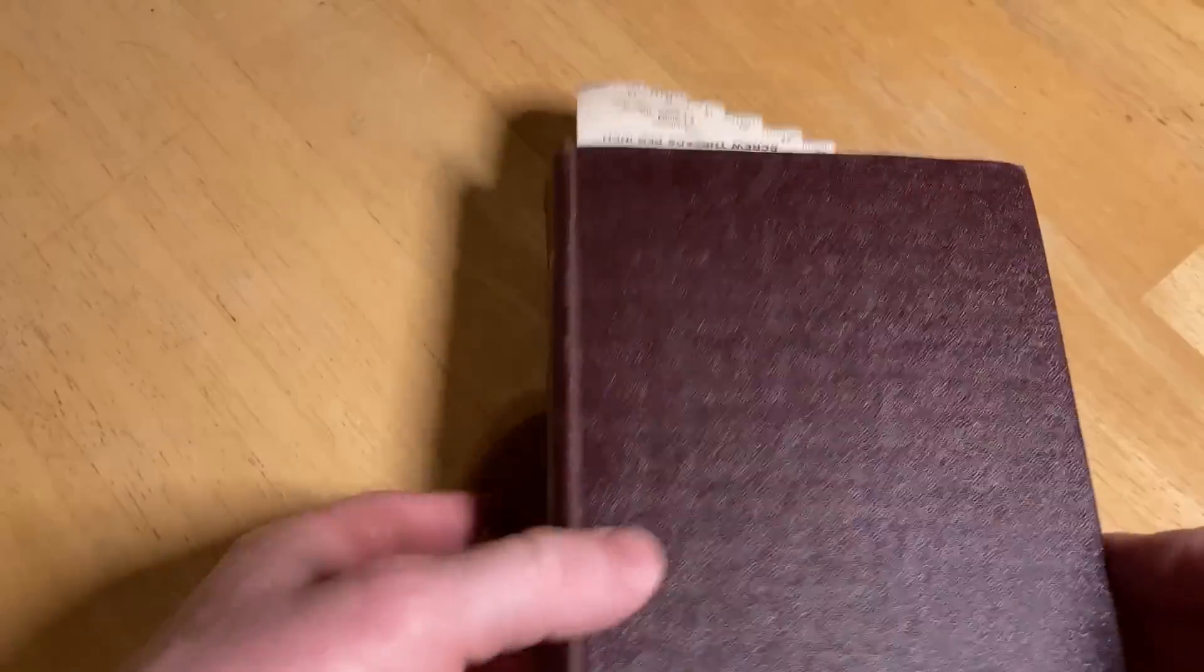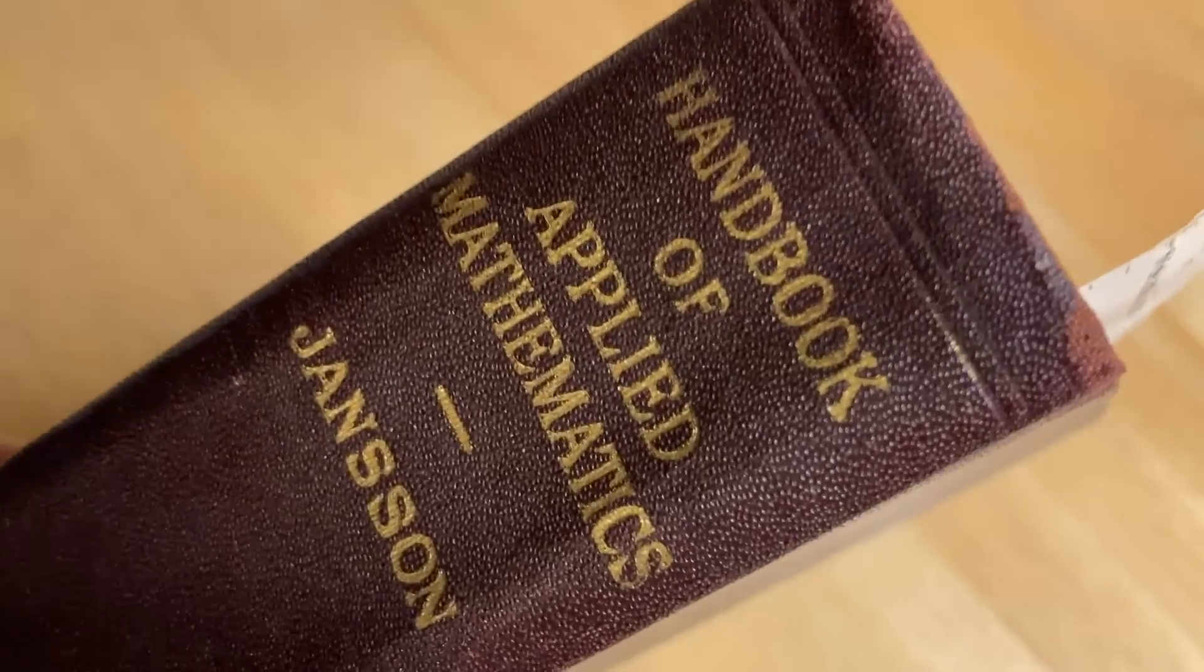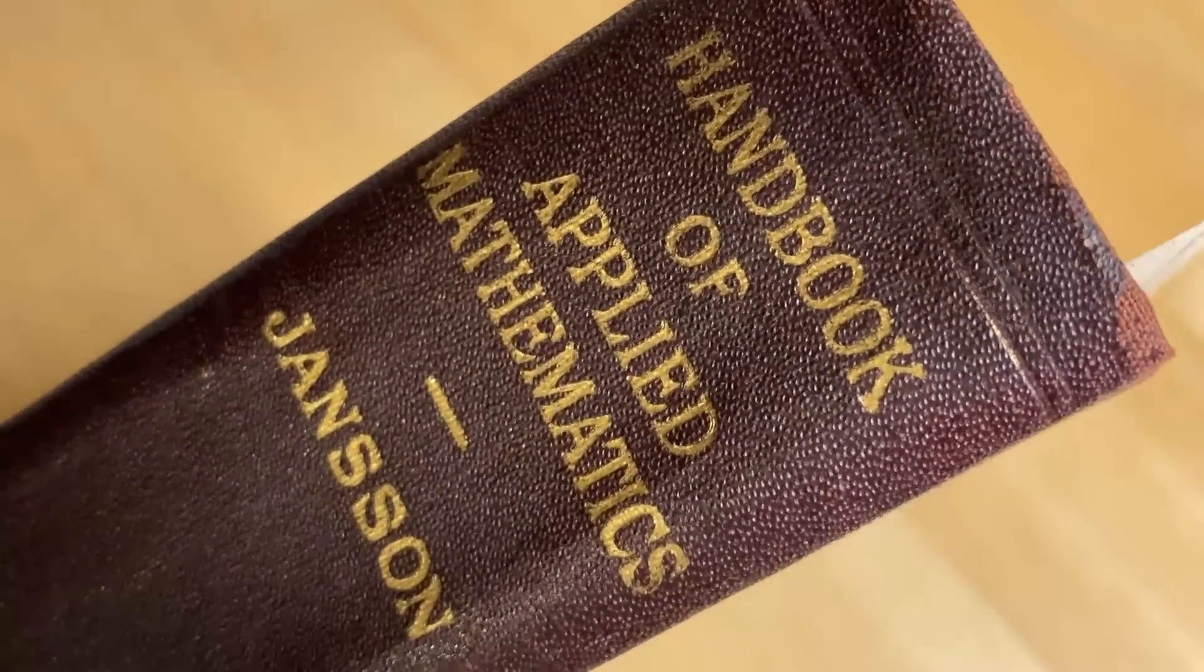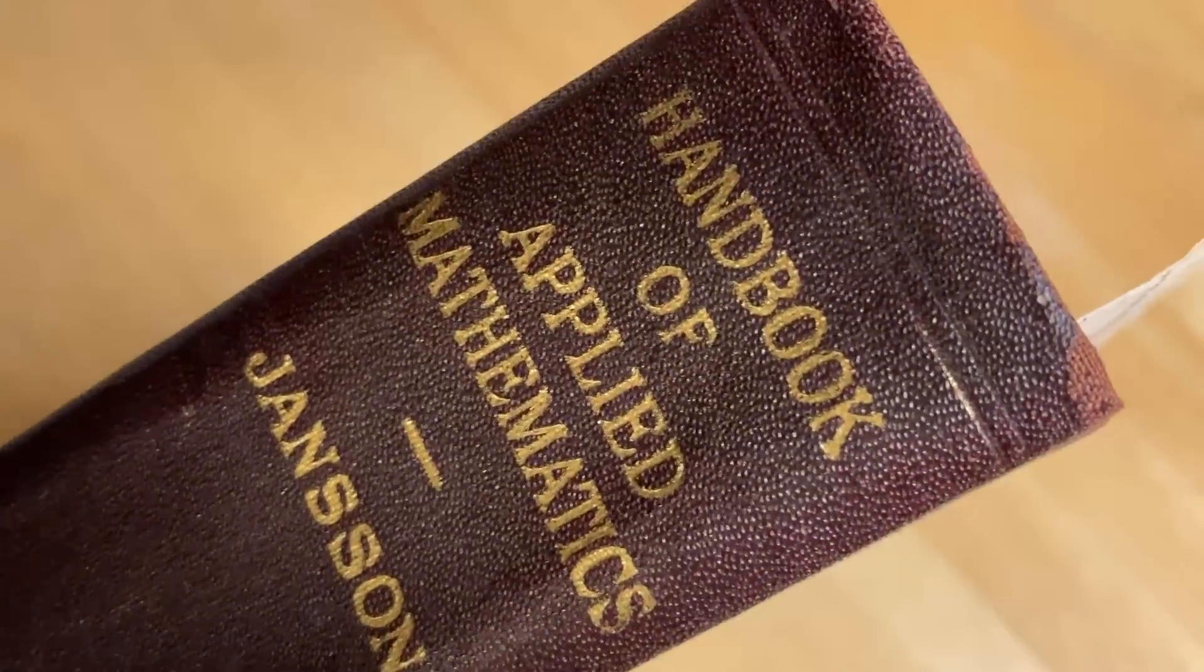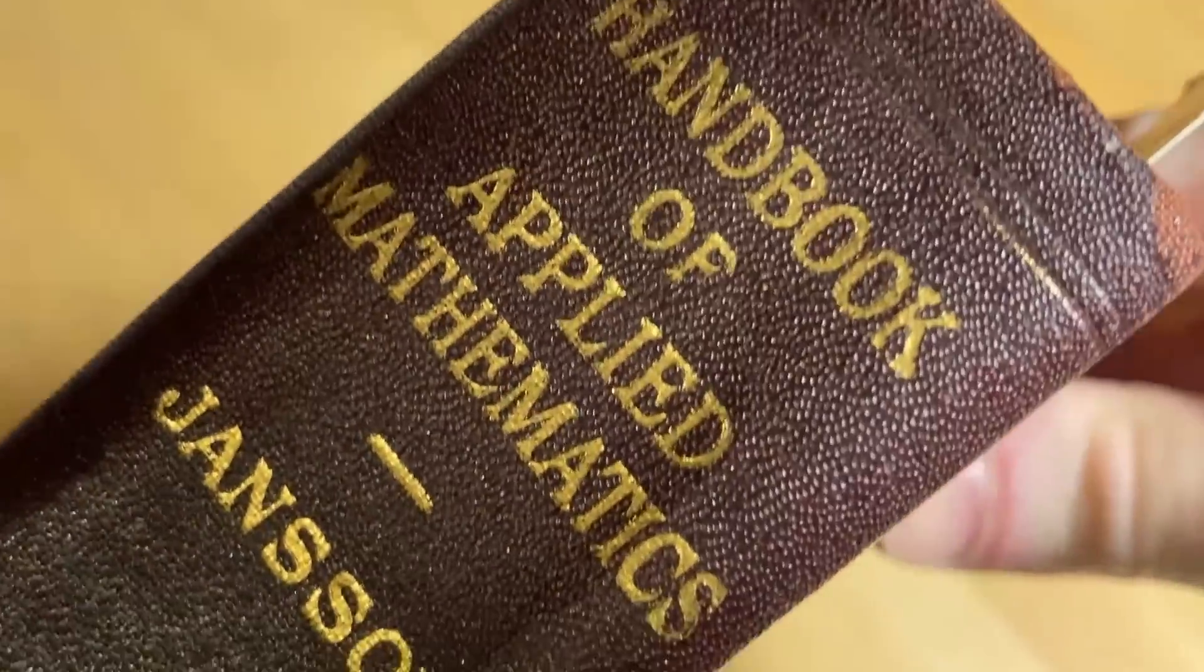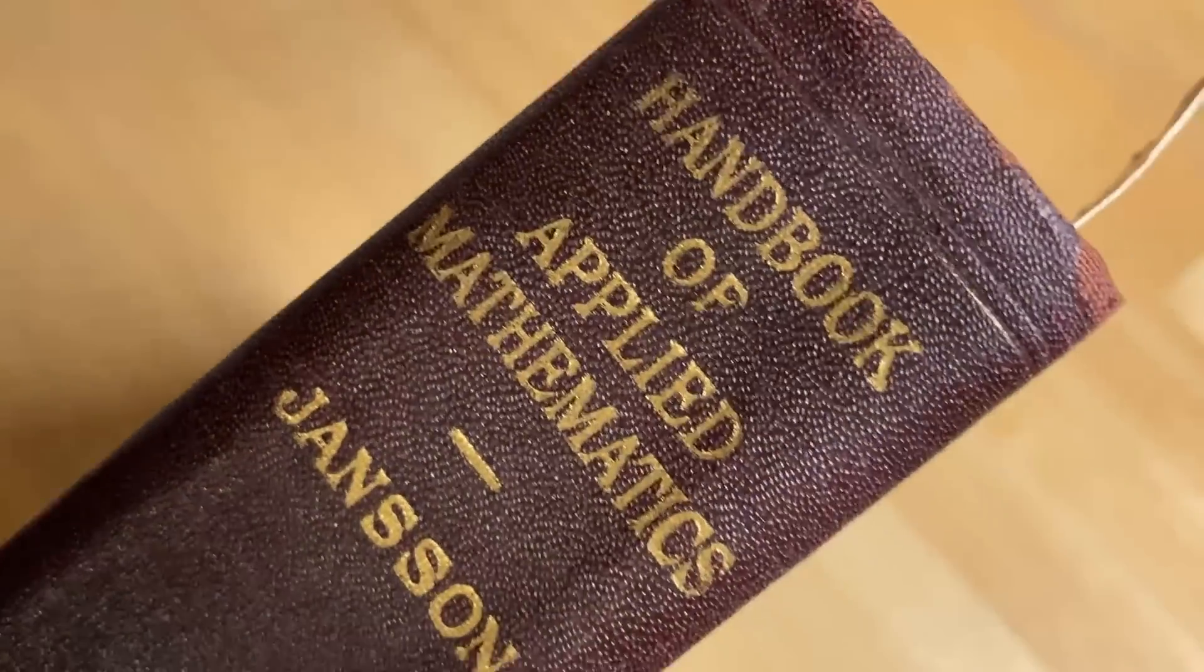The biggest takeaway you should get from this video is that this is a very interesting book. It's probably extremely rare. I don't know. I haven't looked. And it has math that you have never seen before. I mean, this is math that is not really taught in schools anymore. It's hidden mathematics. Again, it's Handbook of Applied Math by Janssen. Good luck.